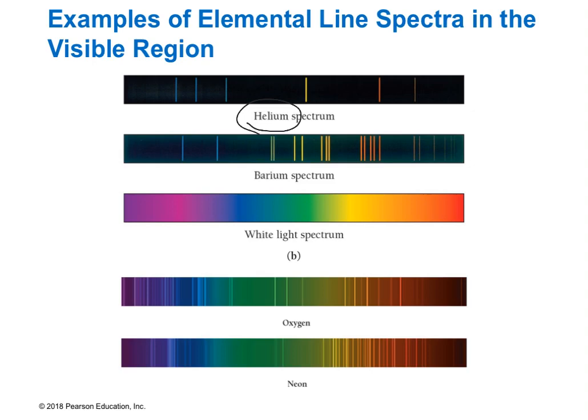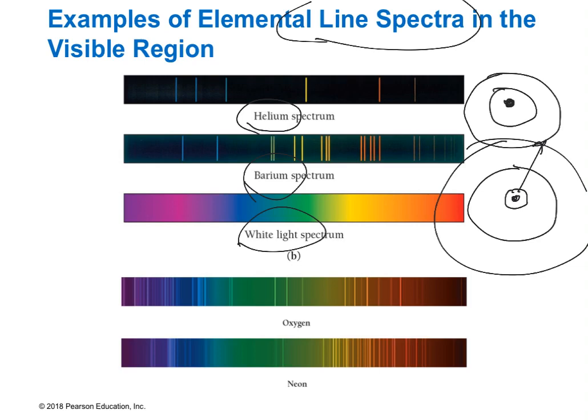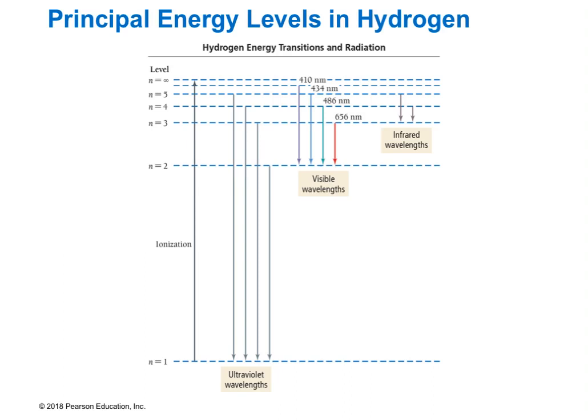Every single element has its own unique line spectrum of the light it emits, depending on the spacing of its electron energy orbitals. Different elements have different energy gaps and therefore different wavelengths of emitted light. You may have done the experiment in high school where you put compounds in a Bunsen burner and they turn beautiful colors — that's exactly what's happening there.